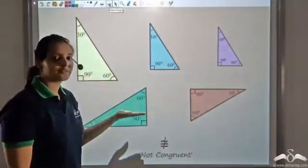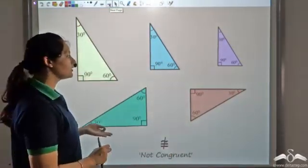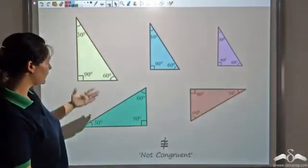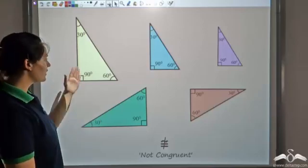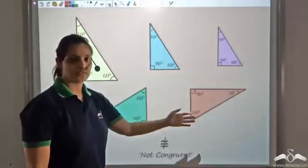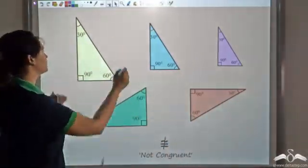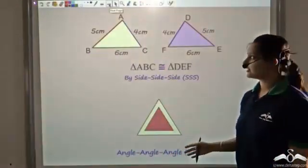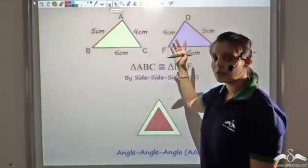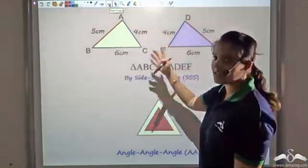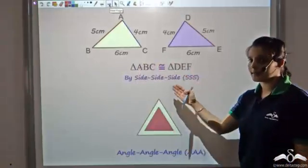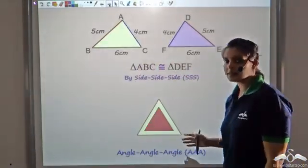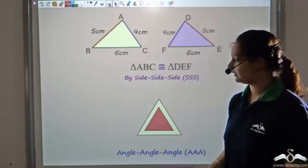They need not be congruent. So if three angles are given to me, I cannot definitely say that the triangles will not be congruent. They may be congruent. Here the size looks the same, whereas here the size is different. They may or may not be congruent. So what you need to take away from this lecture is that if two triangles have the same three sides, then I can say that they are congruent by side-side-side. And if the three angles are the same, then triangles need not be congruent.